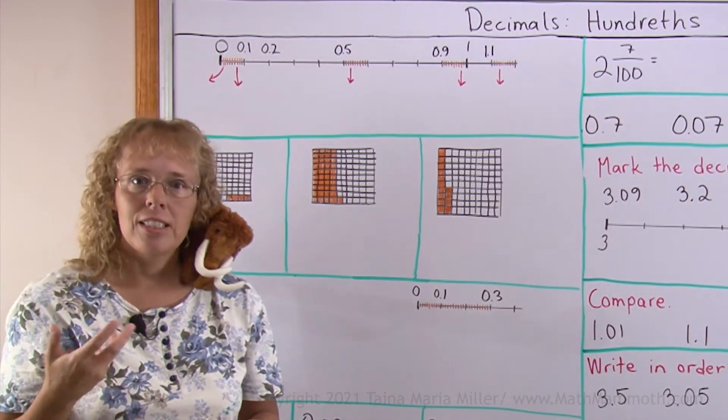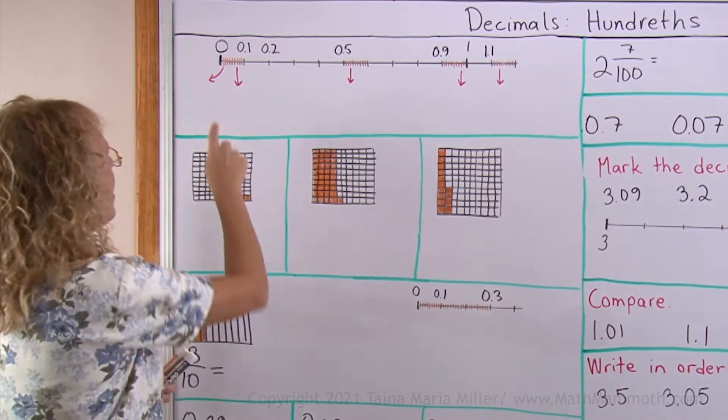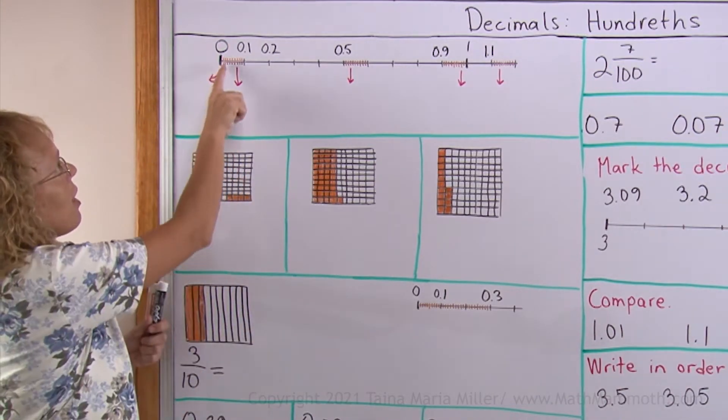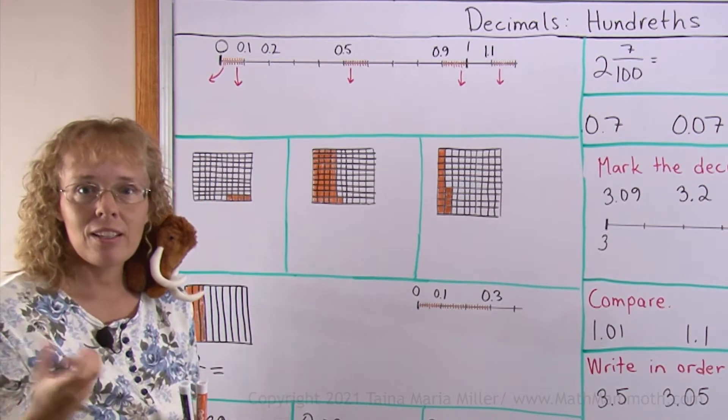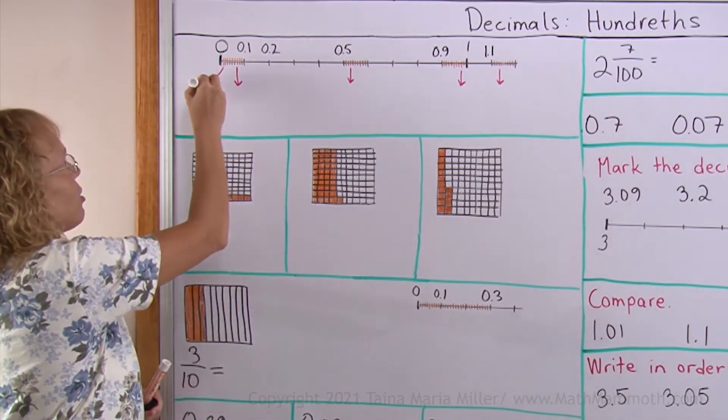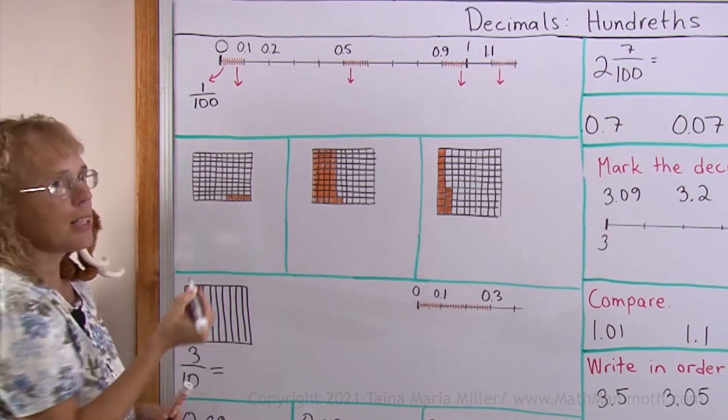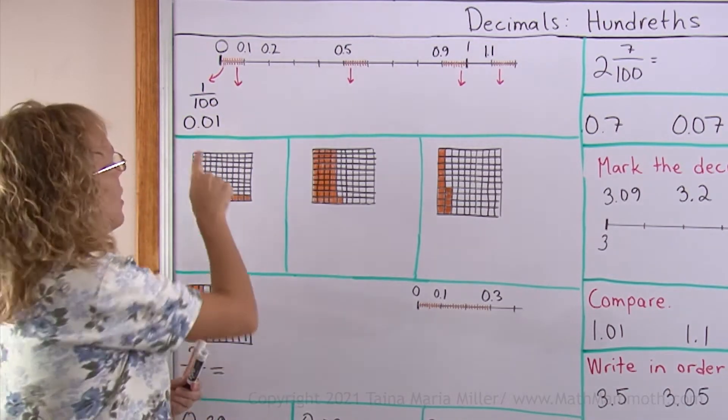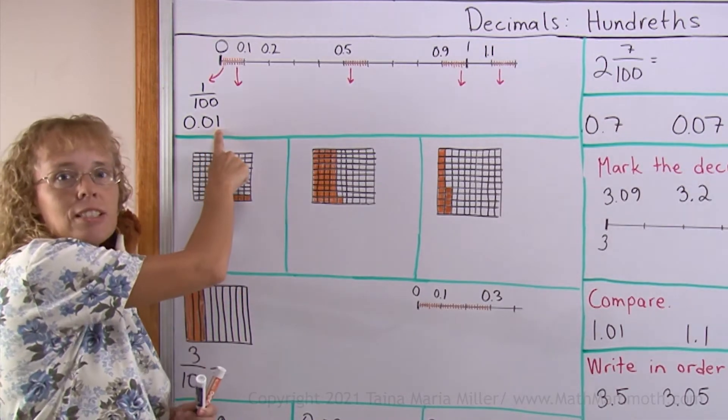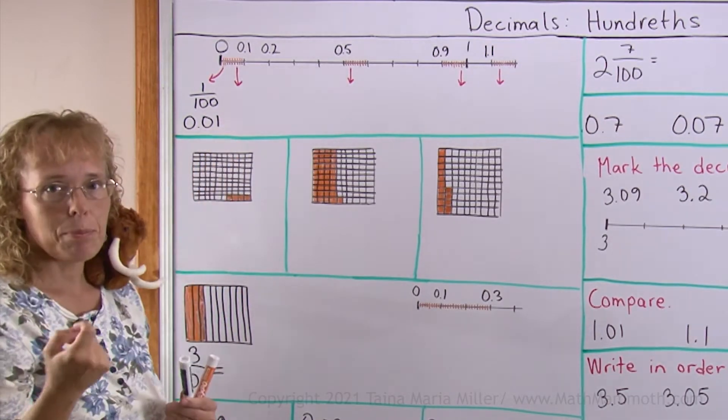Now let's see how they are written as decimals. For example, this very first line after the zero line, the very first line there would be one hundredth. As a fraction you know it's written like this. One hundredth. As a decimal it is 0.01. The second digit after the decimal point, it's the hundredths place.